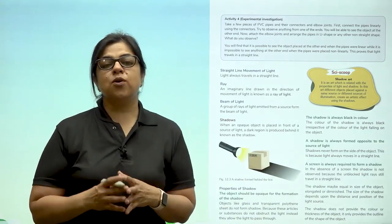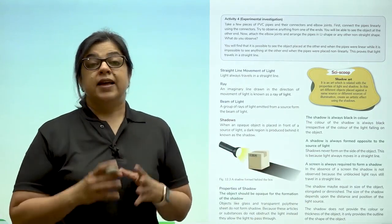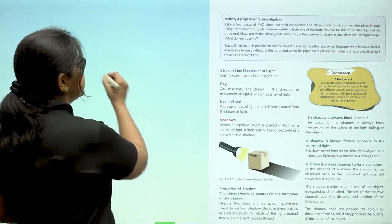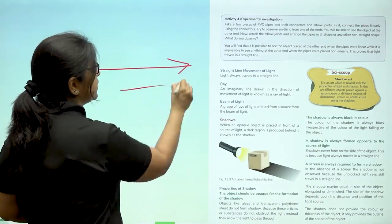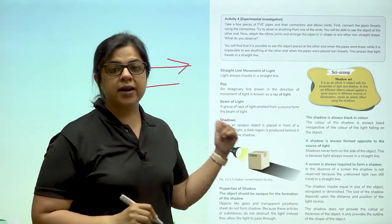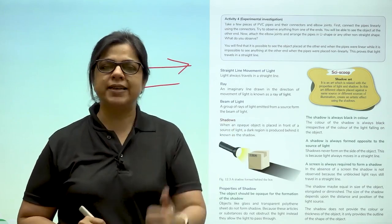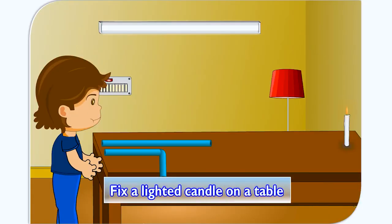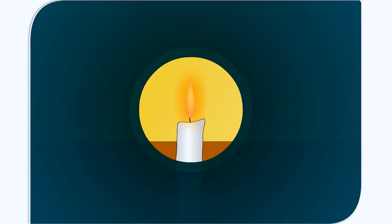Okay, now moving on to the movement of light. Light always travels in a straight line. Now in order to understand this, let us perform a little experiment. Fix a lighted candle on a table. Look at the candle through a straight rubber tube with one eye. Keep the other eye closed. You will be able to see the candle flame.